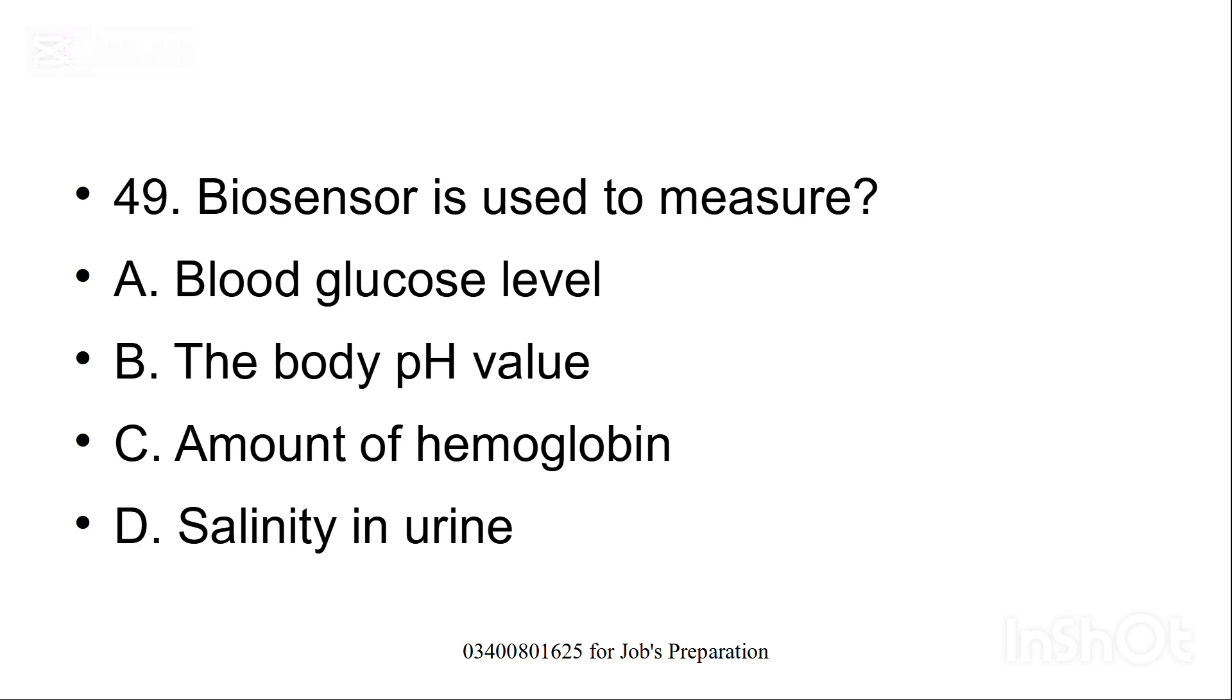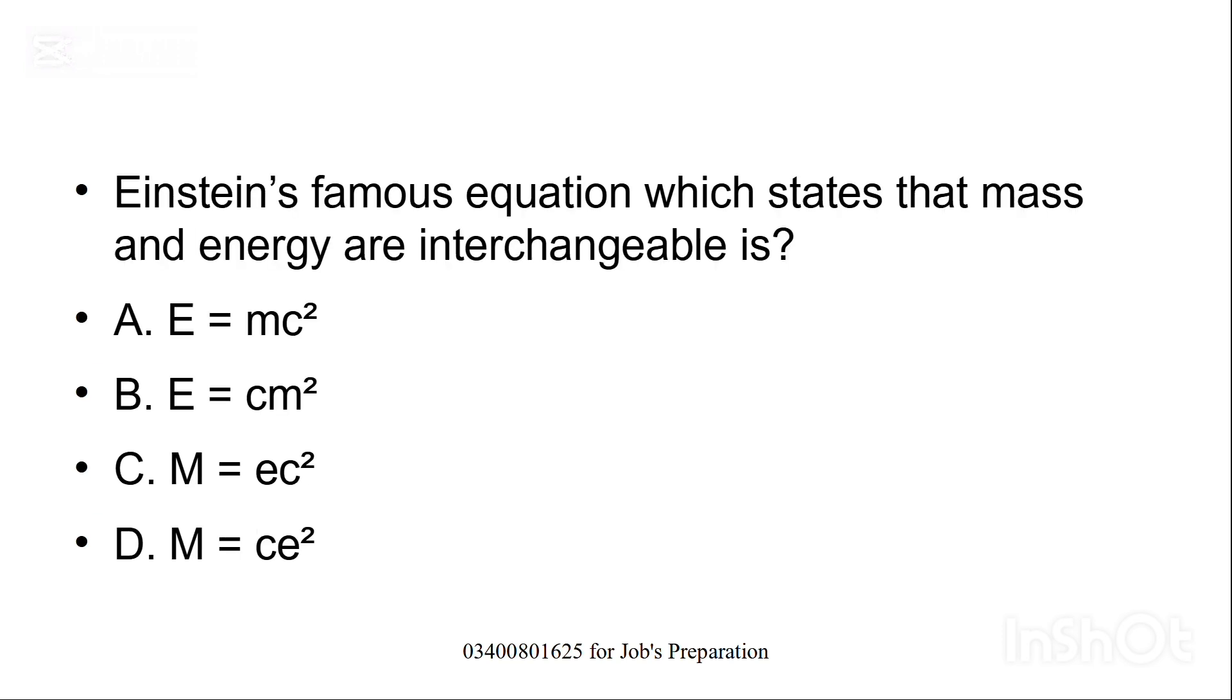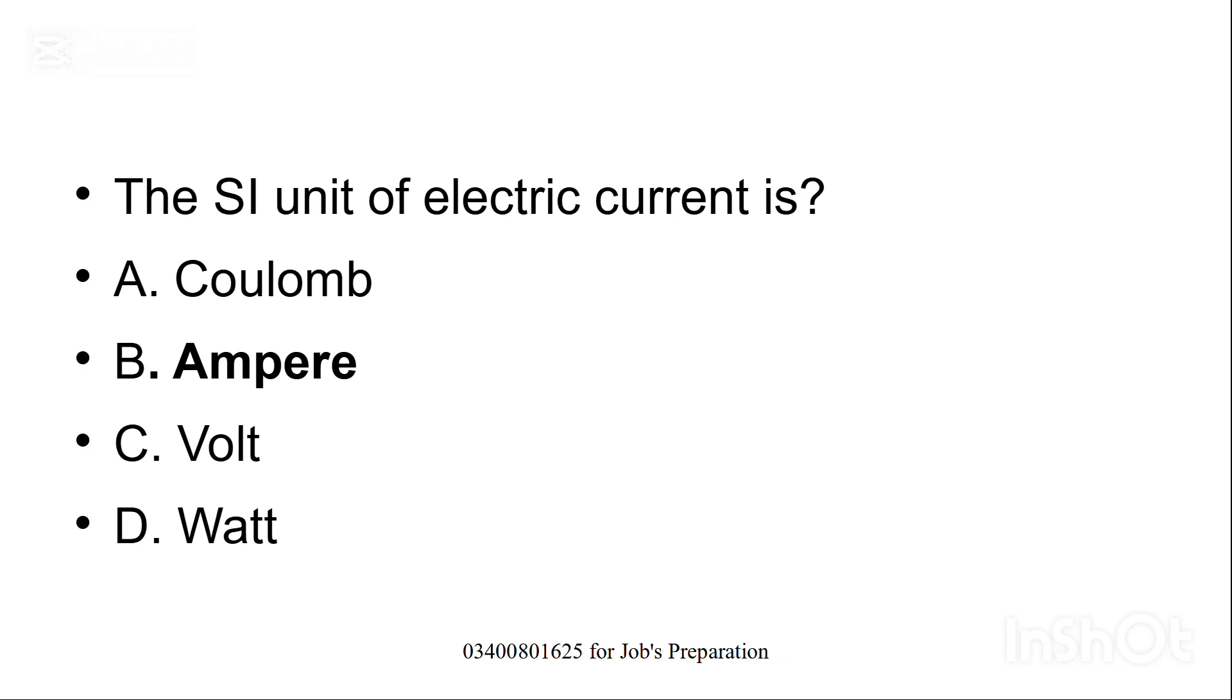Biosensor is used to measure, biosensor kis ko measure karne mein kaam aata hai? Option A, blood glucose level is the correct option. Einstein's famous equation which says that mass and energy are interchangeable is, Einstein ki woh kaunsi famous equation hai in mein se? Option A, E is equal to mc square is the correct option. The SI unit of electric current is, electric current ka SI unit kya hai? Option B, ampere is the correct option.